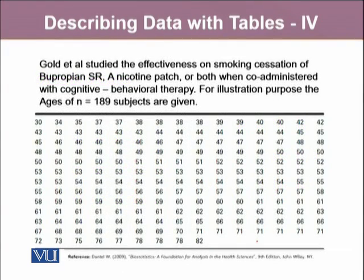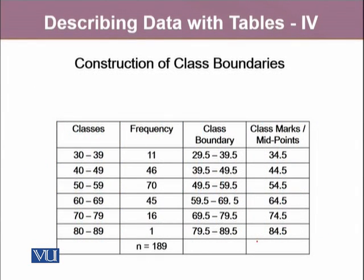Let's look at the data. We are using the same data given by Gold et al regarding the ages of 189 individuals. For this data, we already constructed the classes and frequencies.